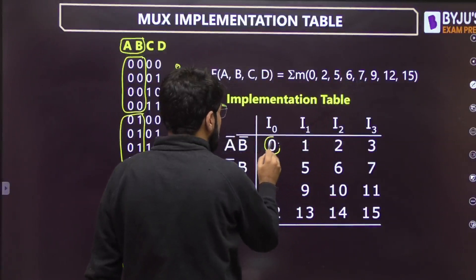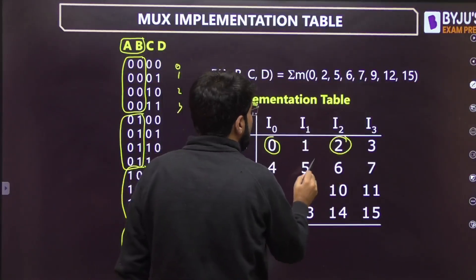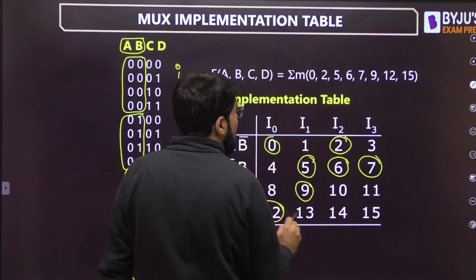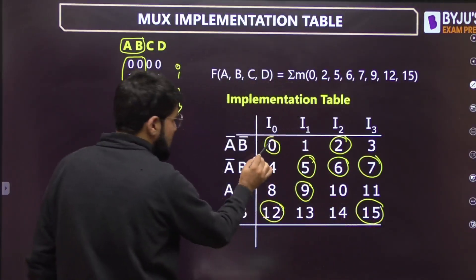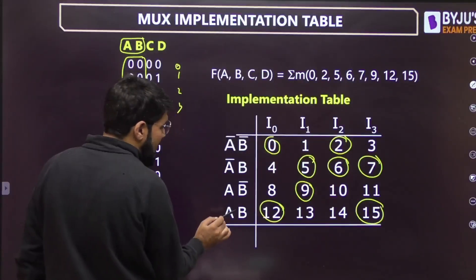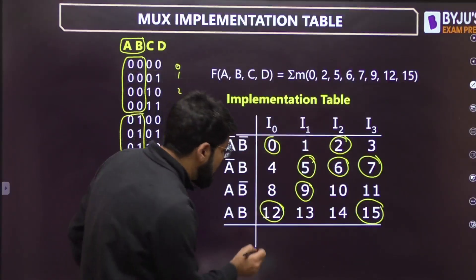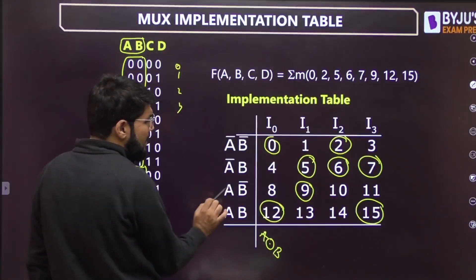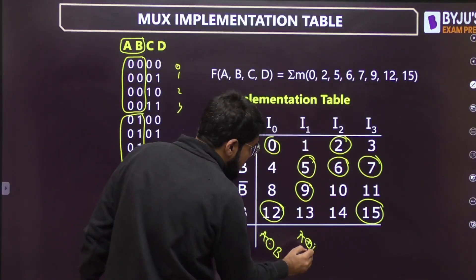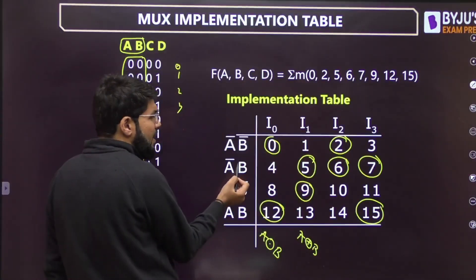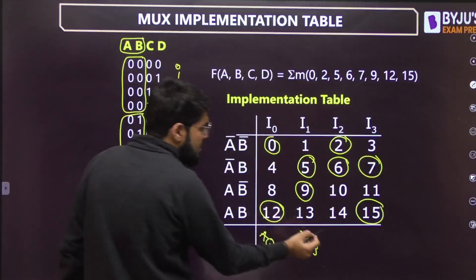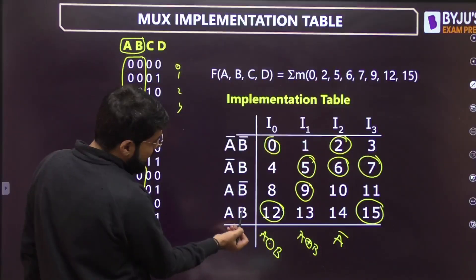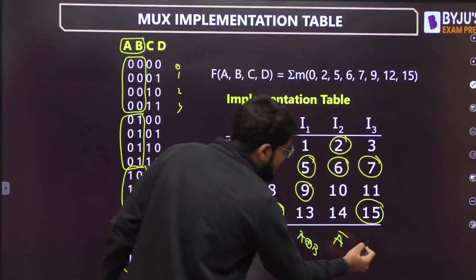Now highlight the given minterms: 0, 2, 5, 6, 7, 8, 9, 12, 15. There are two circles corresponding to A-bar·B-bar and A·B — that is A XNOR B. Two circles for A-bar·B and A·B-bar — that is A XOR B. For A-bar·B-bar + A-bar·B, factor out A-bar: B-bar + B = 1, so the result is A-bar. For A-bar·B + A·B, factor out B: A-bar + A = 1, so the result is B.